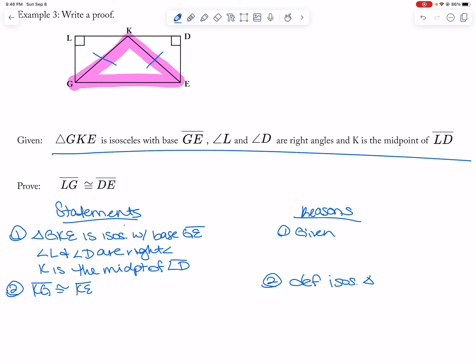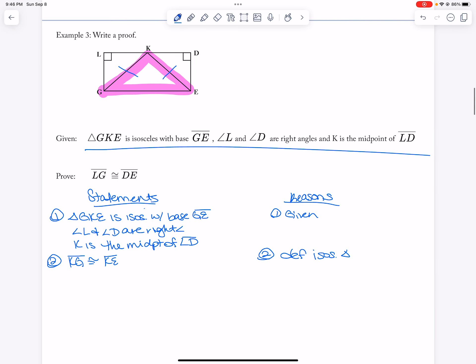Triangle and then triangle LKG and triangle DKE are right triangles by definition of right triangle.